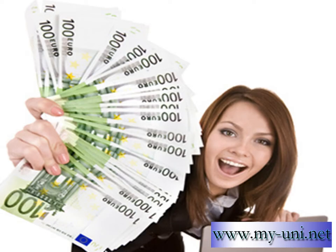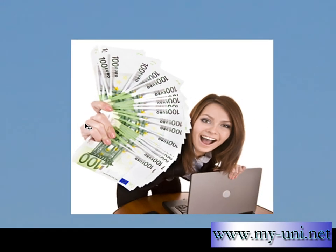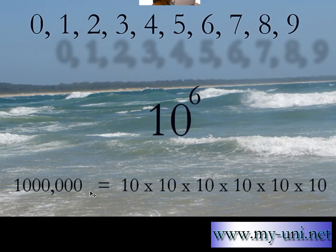The beauty of this system is that we can represent huge quantities not only in several ways but also with very few symbols and very quickly. For example, a quantity of 1 million can be represented with three symbols only: 1, 0, and a 6 as a superscript. This is known as 10 to the power of 6.